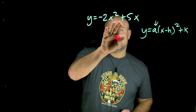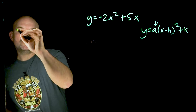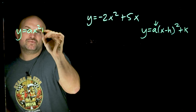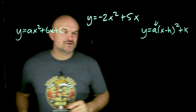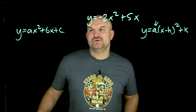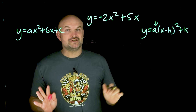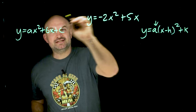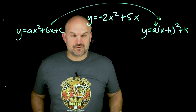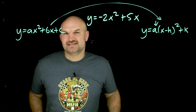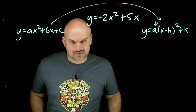The problem we have is that this equation is in standard form: y equals ax squared plus bx plus c. So what we need to do before we can identify the transformations is go from standard form all the way over to vertex form. The process of doing that is called completing the square.